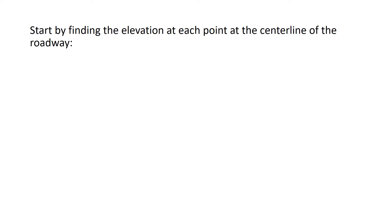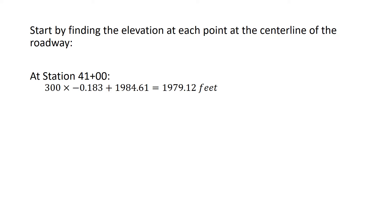I'd like to start with finding the elevation at each point at the centerline of the roadway, starting on the vertical component. At station 41, our centerline elevation is 300 feet from our reference point. So 300 times negative 0.0183 added to the known elevation of 1,984.61 gives us a centerline elevation at station 41 of 1,979.12 feet.